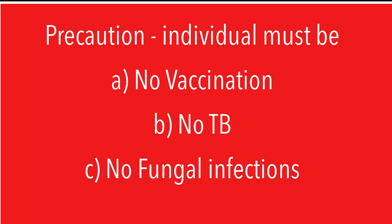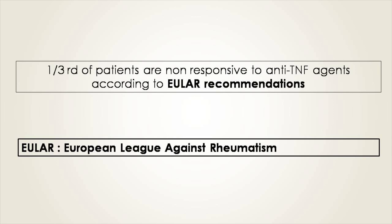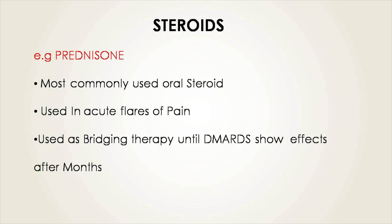Before giving biological agents, you must ensure the patient is up to date with vaccinations, is not suffering from TB, and does not have any fungal infections. According to EULAR — the European League Against Rheumatism, a large international evidence-based task force — one third of patients show insufficient response to anti-TNF agents. In those patients, switching to a non-TNF targeted therapy is an acceptable strategy.